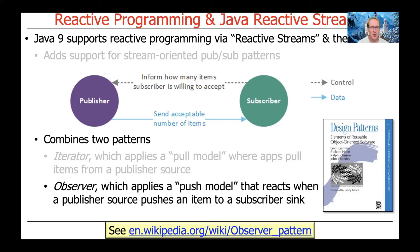Subscribers are the sinks — the things that actually consume the data. Publishers are producers that produce some amount of data where that amount is designated by subscribers. Subscribers receive the events that are pushed to them by the publisher. That combination of the iterator and observer patterns forms essentially the publisher-subscriber pattern, which is another pattern from the POSA 1 book.